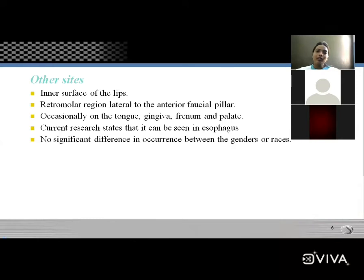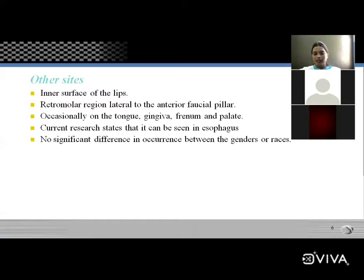Other sites for Fordyce granules include the inner surfaces of the lip, retromolar trigone, and lateral to the anterior and posterior pillars. Occasionally they occur on the tongue, gingiva, frenum, and palate. Current research also reports them in the esophagus. No significant gender difference is seen.